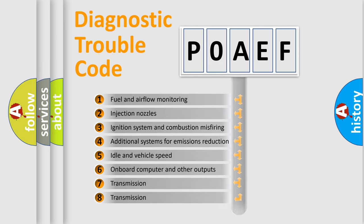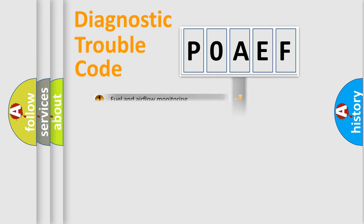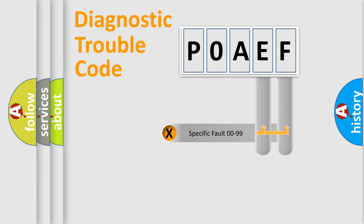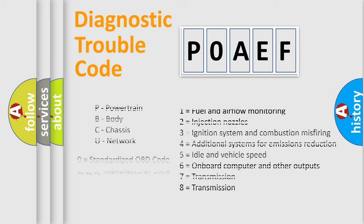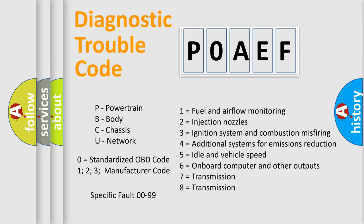The distribution shown is valid only for the standardized DTC code. Only the last two characters define the specific fault of the group. Let's not forget that such a division is valid only if the other character code is expressed by the number zero.